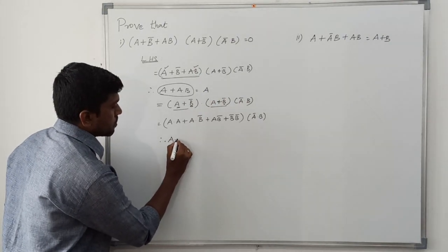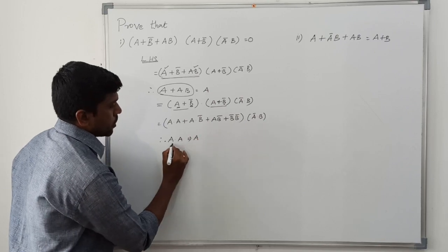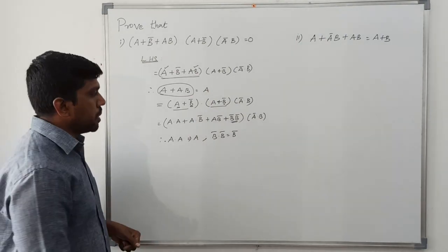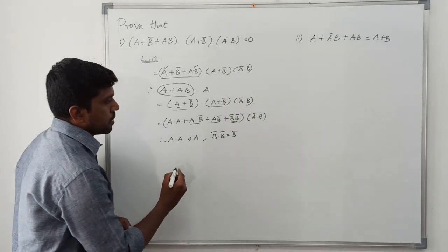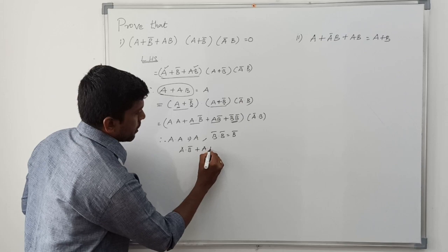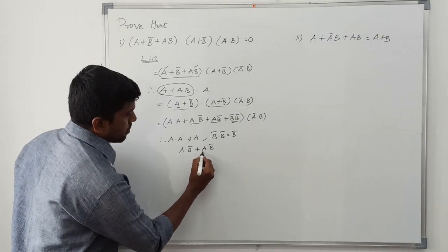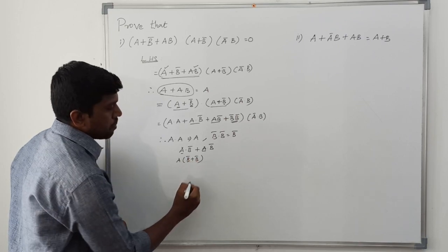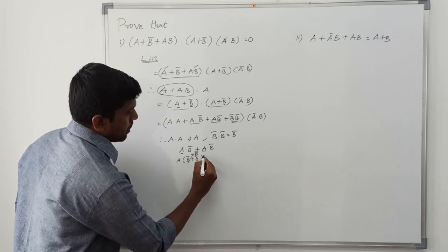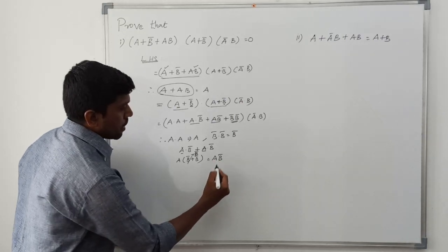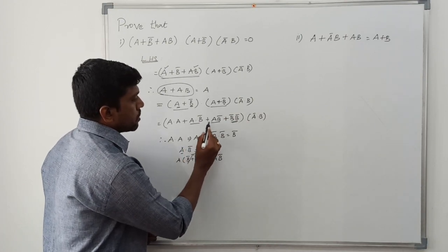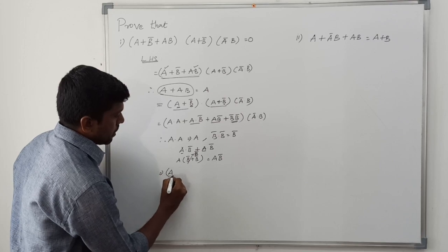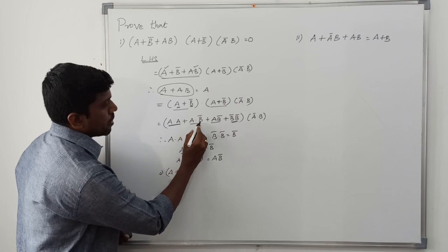Now, a·a equals a. Since a is a common term, I factor it out. Also, a·b̄ + a·b̄ — since the two terms are the same, we take it once. After simplification you get a·b̄. And b̄·b equals 0. So the result of the first two terms multiplied is a + a·b̄.